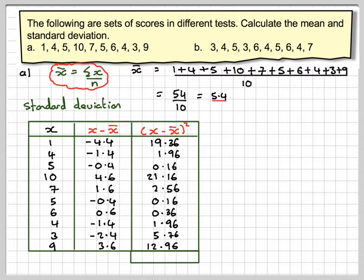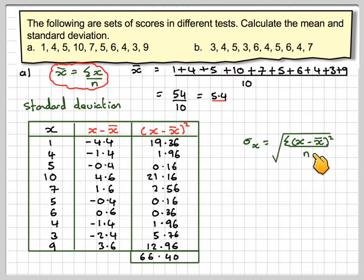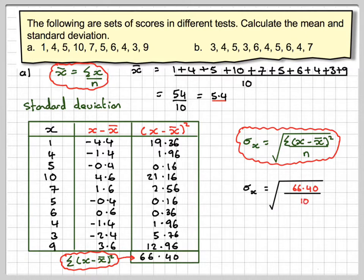Then we add all these up, which gives me 66.40, and we take the average of those — dividing by the number of items n. So the standard deviation is the square root of σ(x − x̄)² divided by n. Since we squared them, we take the square root. So the sum of (x − x̄)² is 66.40. Putting the numbers in: √(66.40 / 10) = 2.5768, which gives an answer of 2.58.